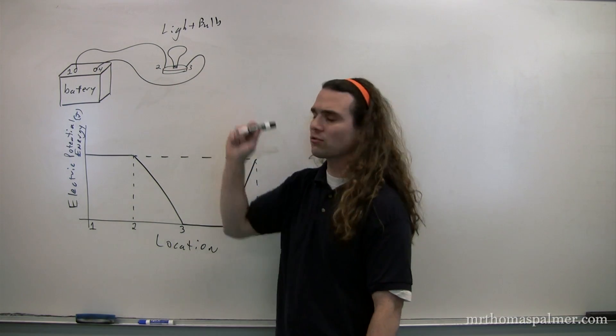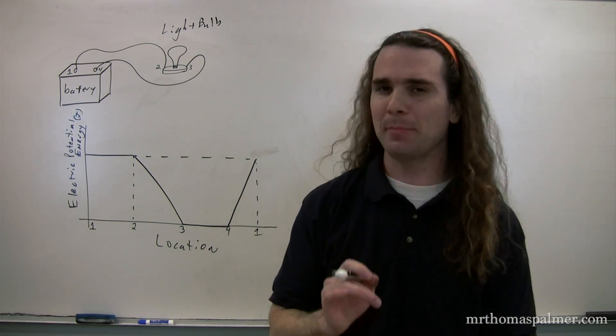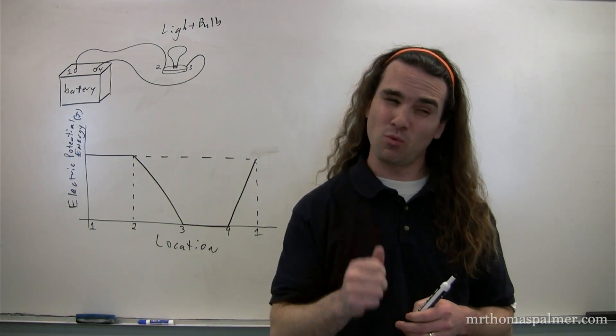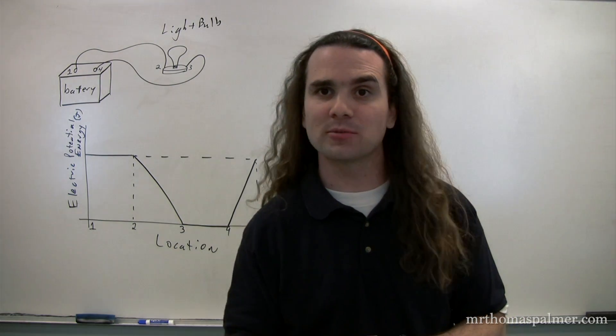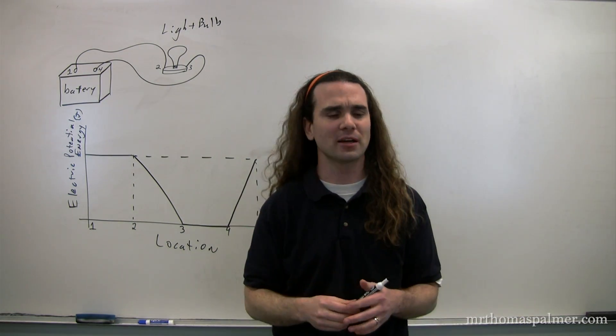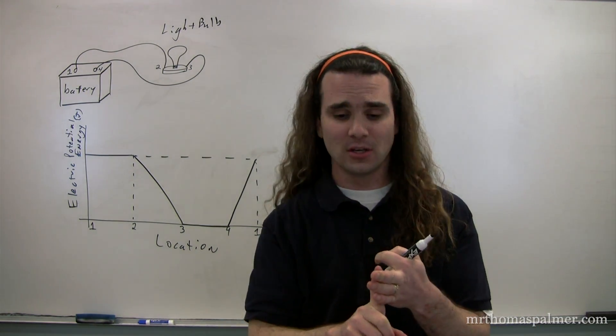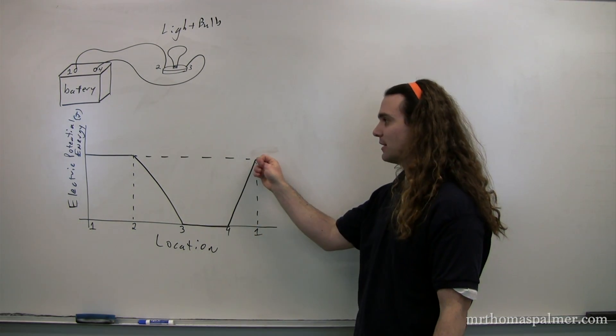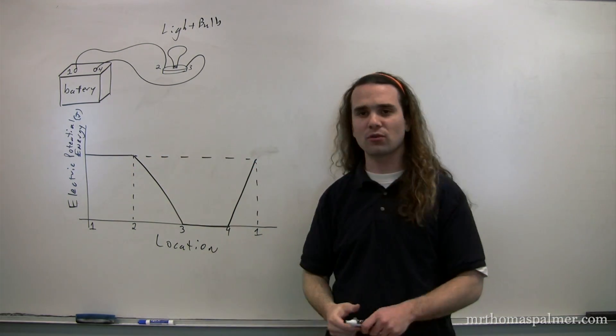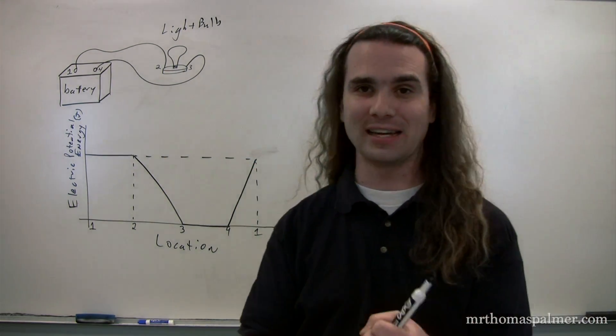Let's talk about what happens from 2 to 3, going across the light bulb. The question is: where does the electric potential energy go? Bo suggests it's kind of like friction — the electric potential energy goes to heat. And it's a light bulb, so light energy as well. There is also sound energy — light bulbs also make sound, some of them quite a lot. So the electric potential energy is converted to heat, light, and sound. The energy is gained in the battery — that's what the battery does — and then lost as the electrons go across the light bulb, converted to heat, light, and sound.